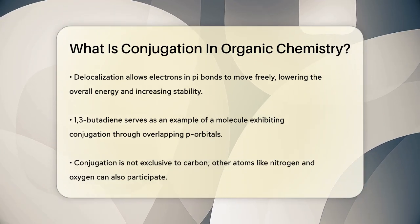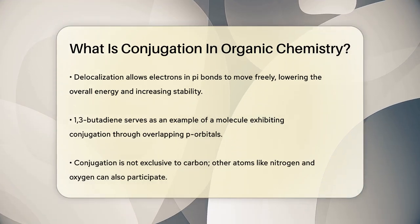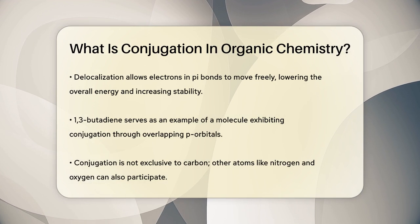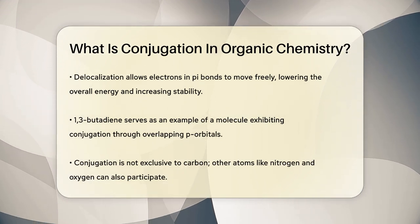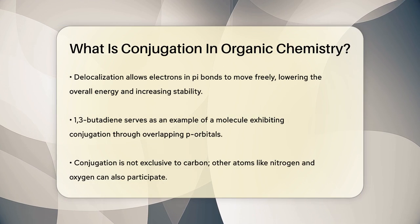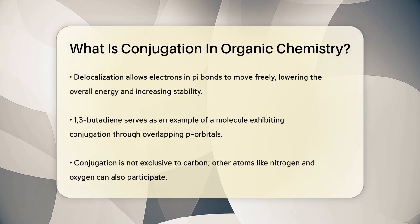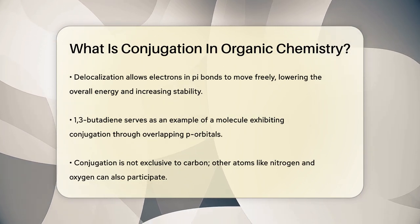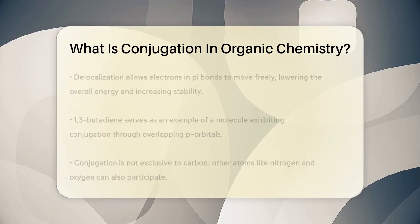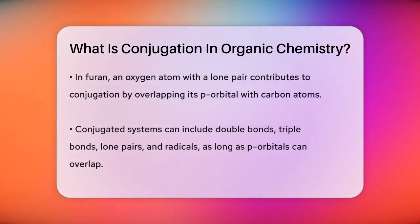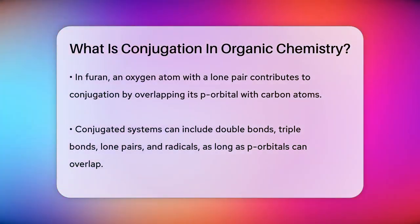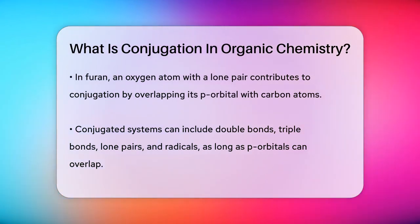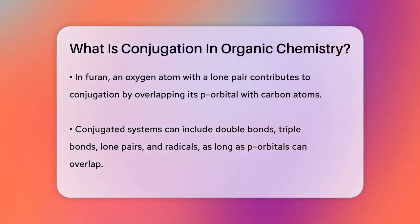This delocalization of electrons lowers the overall energy of the molecule and increases its stability. Conjugation isn't limited to just carbon atoms — other atoms like nitrogen and oxygen can also be part of the conjugated system. For example, in furan, an oxygen atom with a lone pair contributes to the conjugation by overlapping its p orbital with the adjacent carbon atoms.